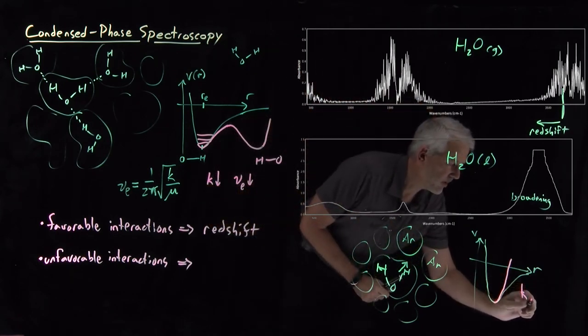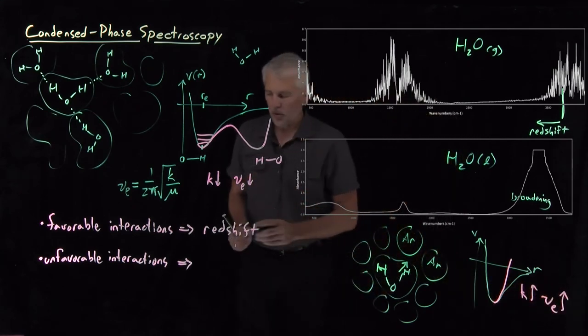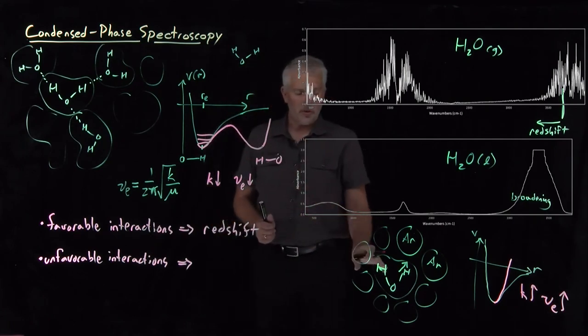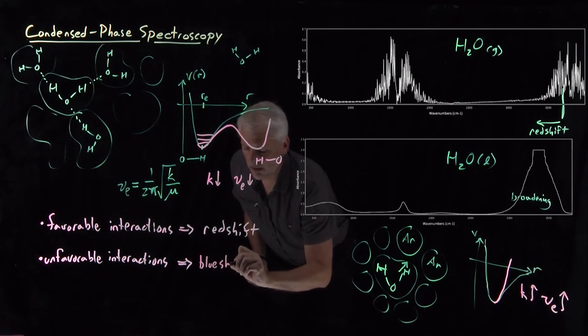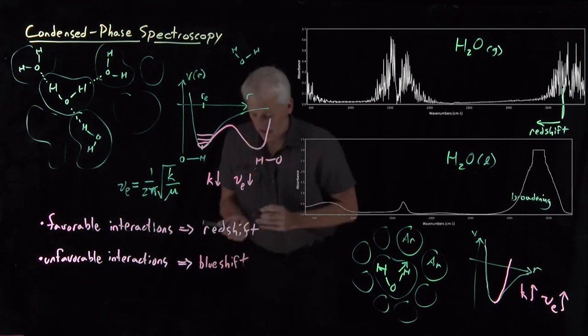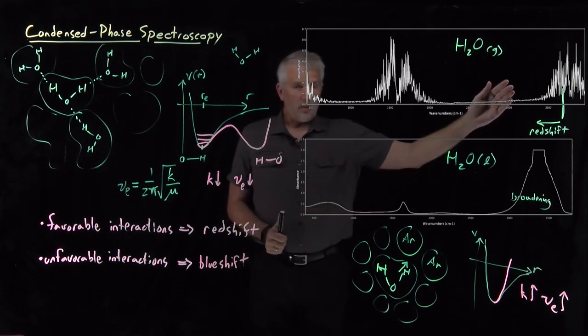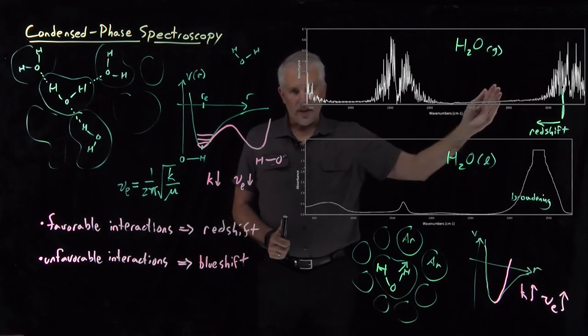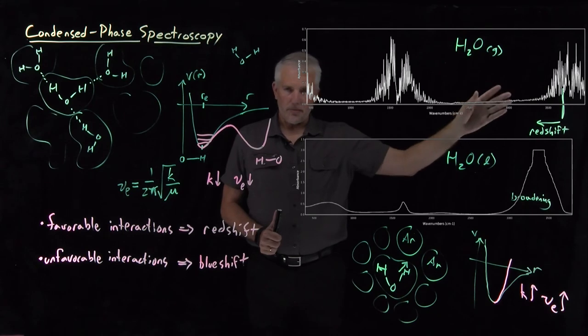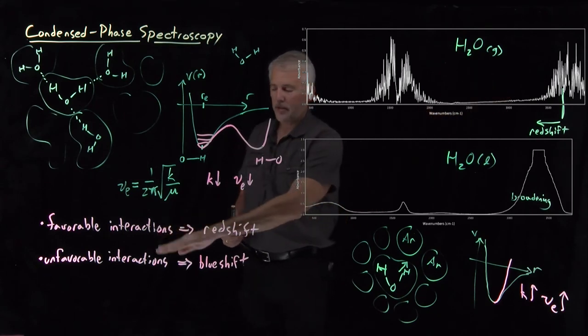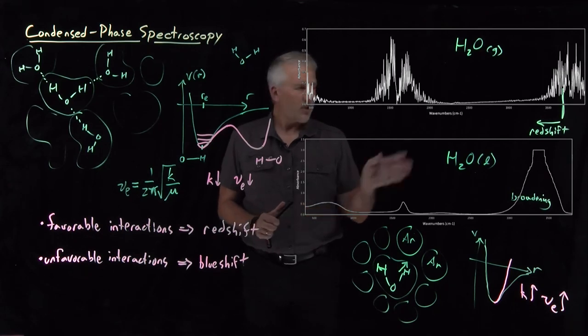The exact opposite thing will happen. The curvature of that well has increased, the vibrational frequency will increase, and the result will be that if I have unfavorable interactions between a solute and the solvent that surrounds it, then in that condensed phase, in that liquid, I'll get a blue shift in the absorption band. As we go from gas to liquid, it's not always true that we get a red shift in all the absorption bands. But in fact, that red shift, or sometimes blue shift, tells us something about the strength of the interactions with that molecule and the molecules that surround it in the liquid phase.